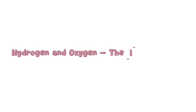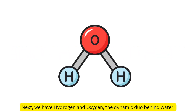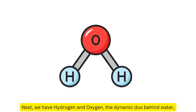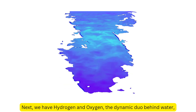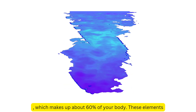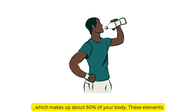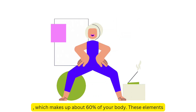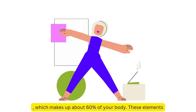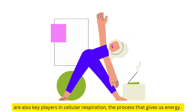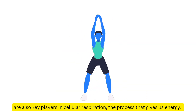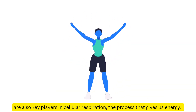Hydrogen and oxygen — the life essentials. Next, we have hydrogen and oxygen, the dynamic duo behind water, which makes up about 60% of your body. These elements are also key players in cellular respiration, the process that gives us energy.